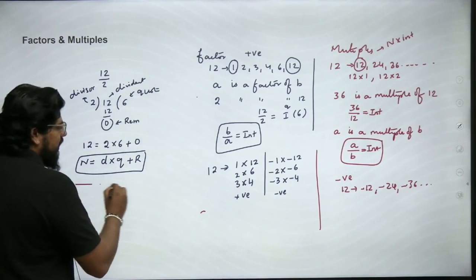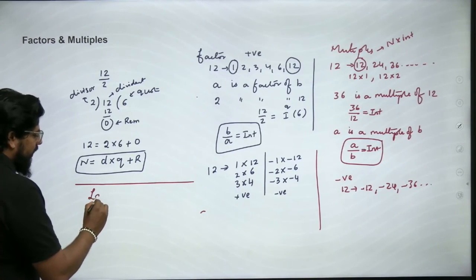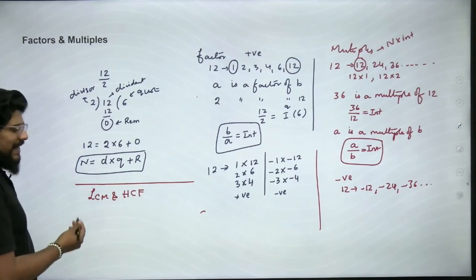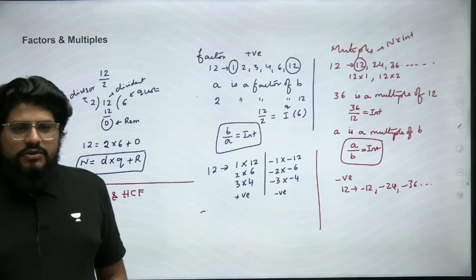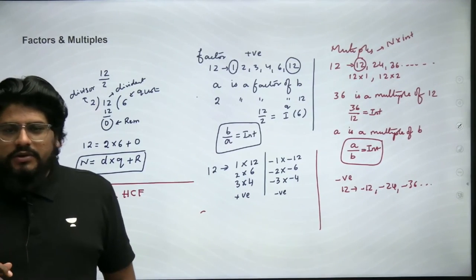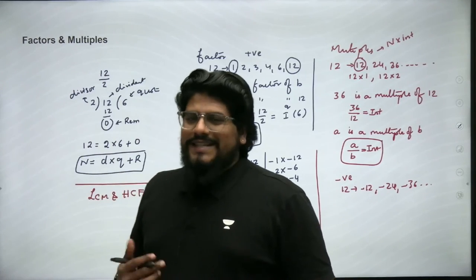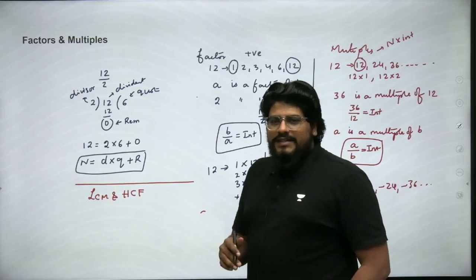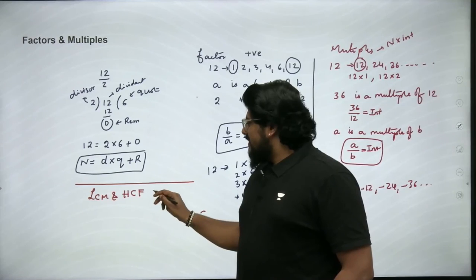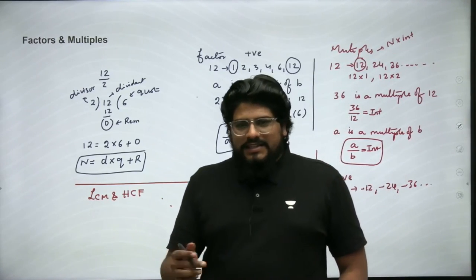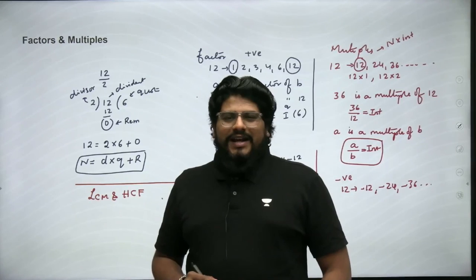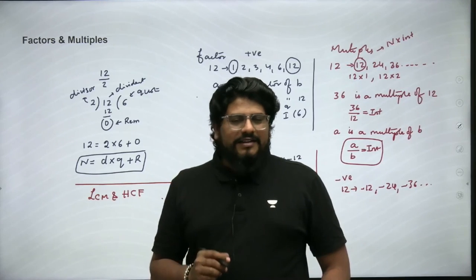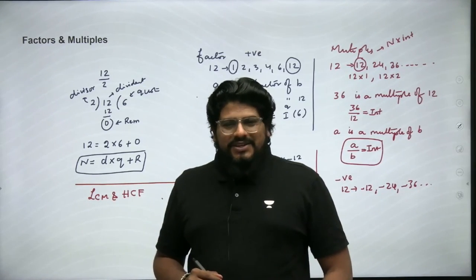The application of factors and multiples comes with finding LCM and HCF. LCM stands for Least Common Multiple — out of the multiples, we look at the least common one. HCF is Highest Common Factor — out of the factors, we look at the highest common one. We'll discuss this in the next video, so stay tuned. Let's crack it — let's focus on CLAT 2024 and secure our NLU admit!